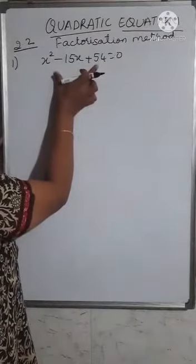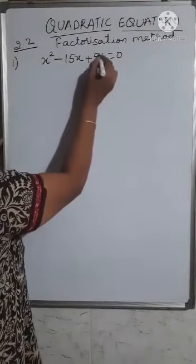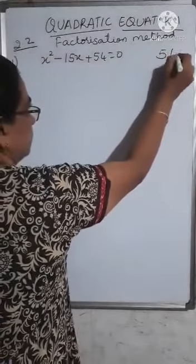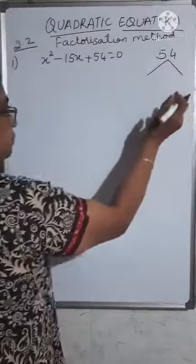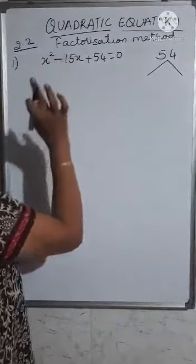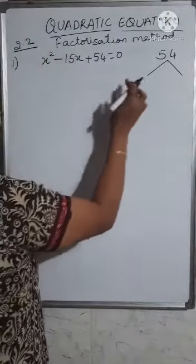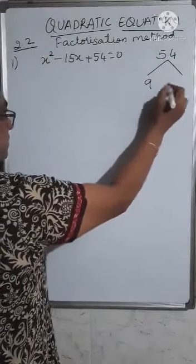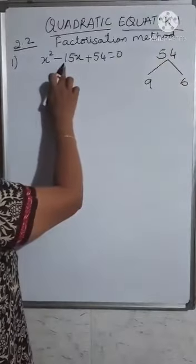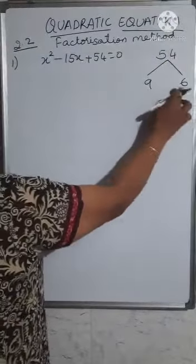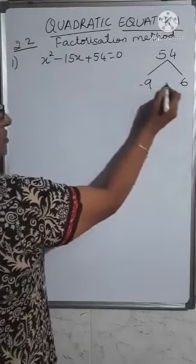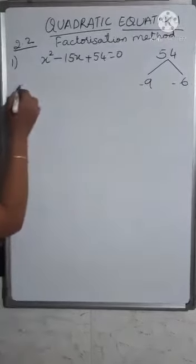Here you have three terms. Take the product of the first and the last term — you have 54. Find factors of 54 such that by adding them you get the middle term. The factors are 9 and 6: 9 times 6 is 54. Since adding them gives the middle term, give both the same sign.